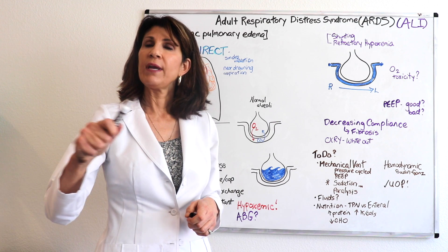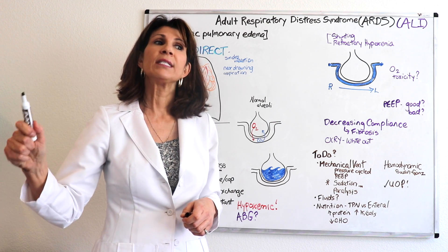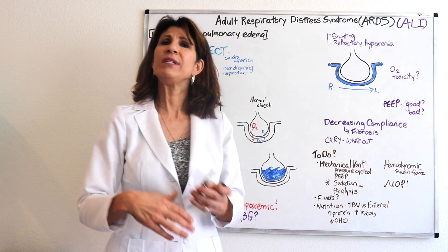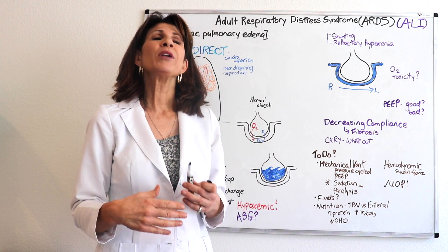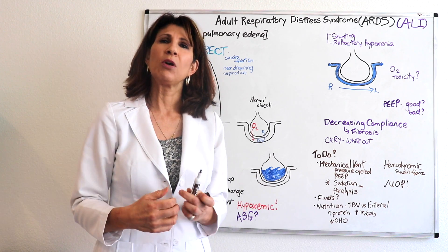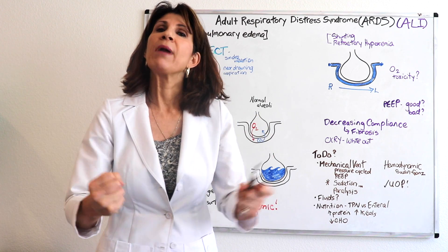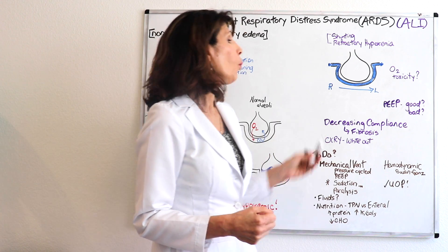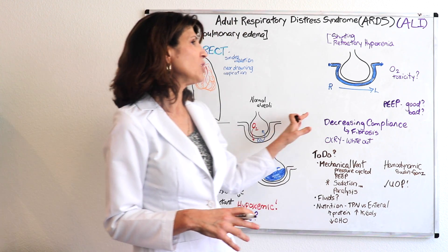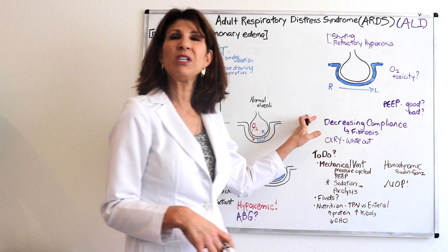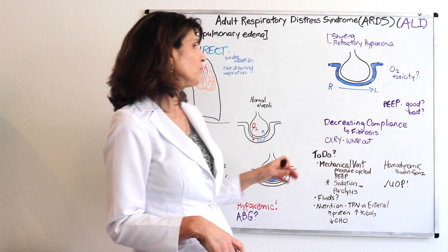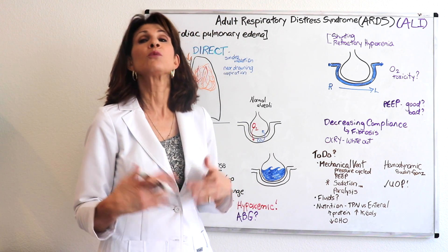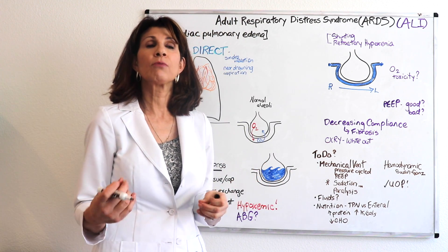This is a good opportunity to consider pressure-cycled ventilation, which we discussed in the ventilator video. With pressure-cycled ventilation, the inspiratory phase ends when a preset pressure is reached in the airway. Even with decreased compliance, we won't overstretch the alveoli or risk barotrauma. Pressure-cycled ventilation is one of the key maneuvers when the patient's alveoli become that compromised.